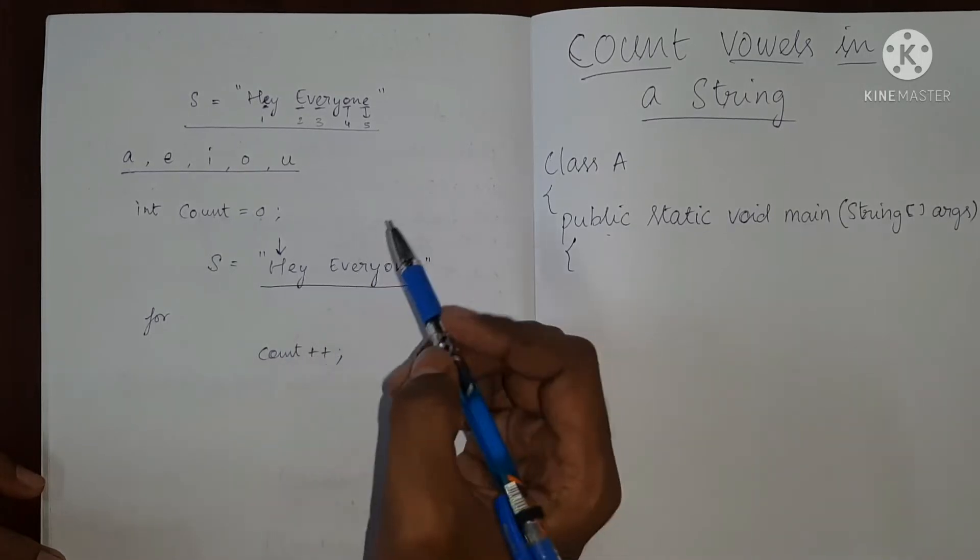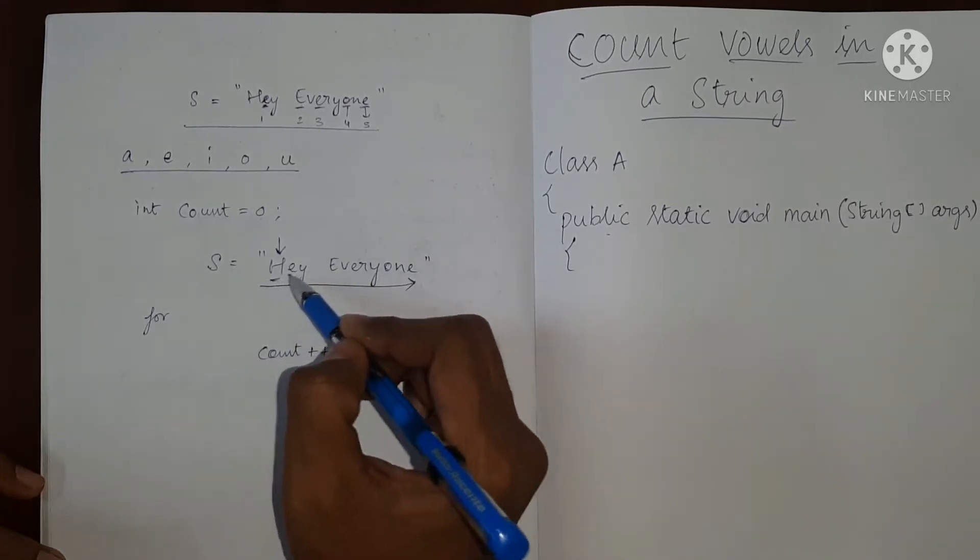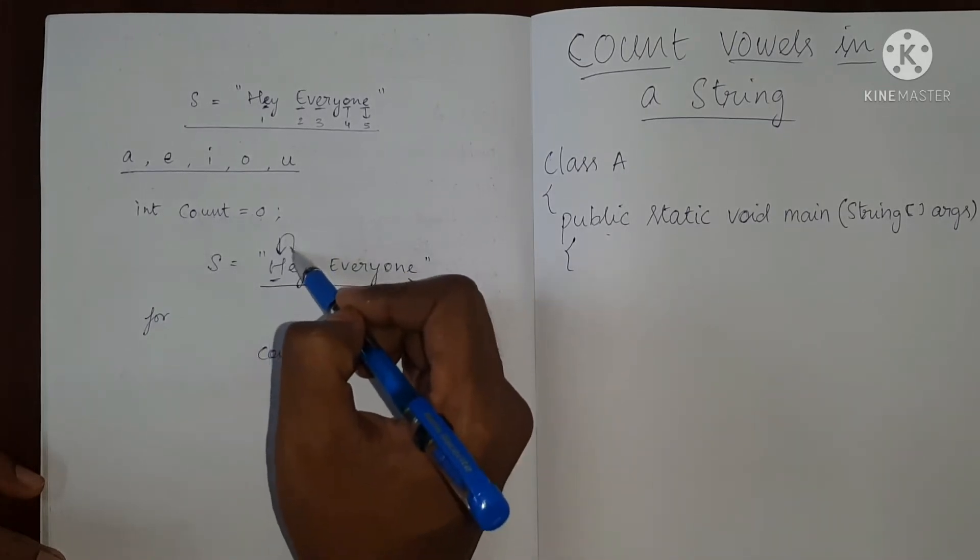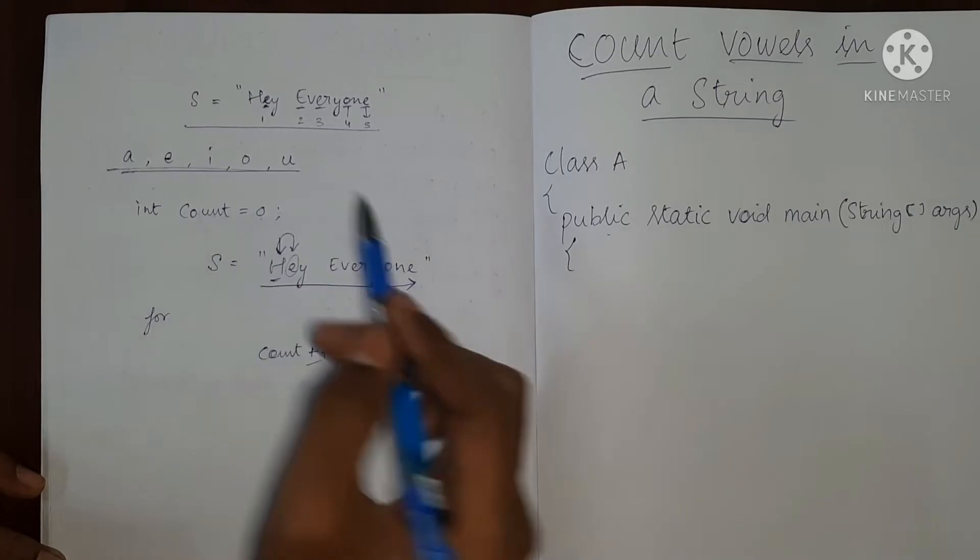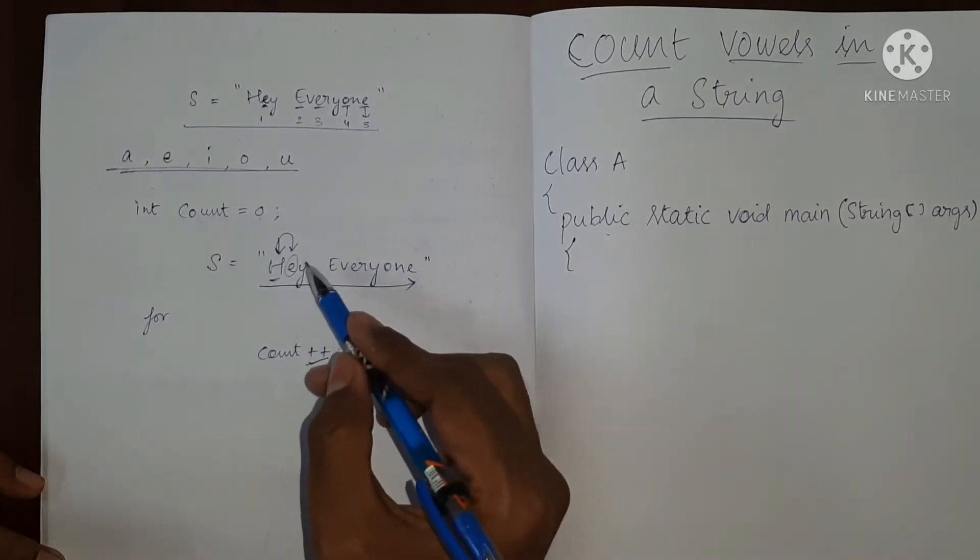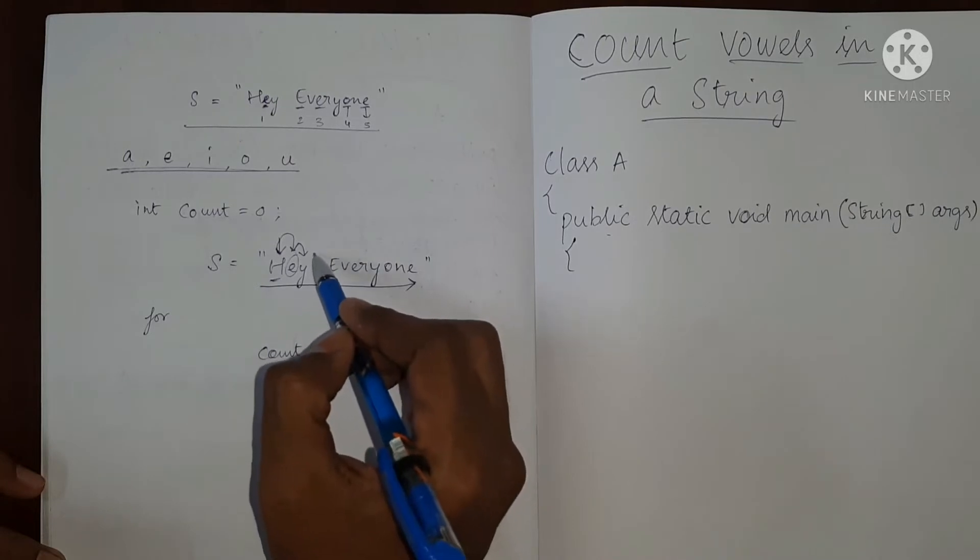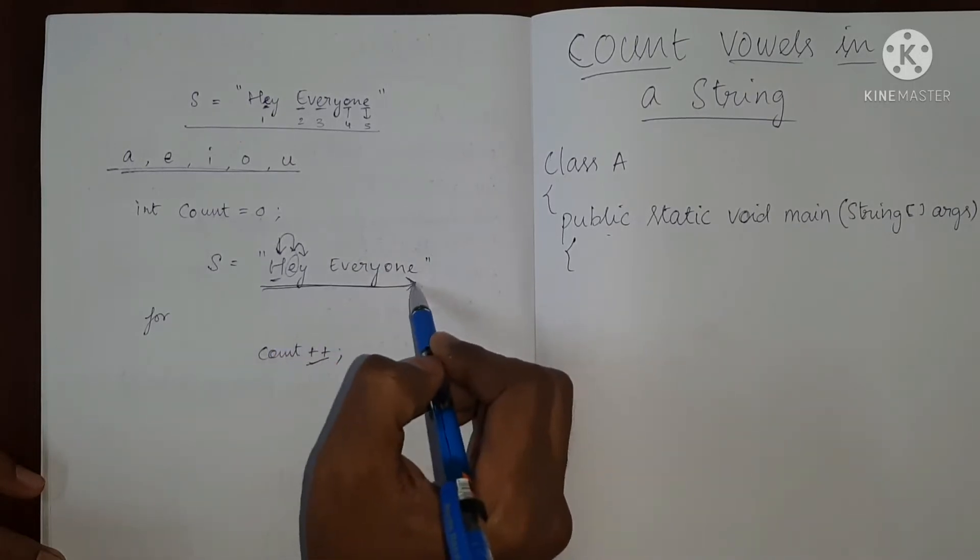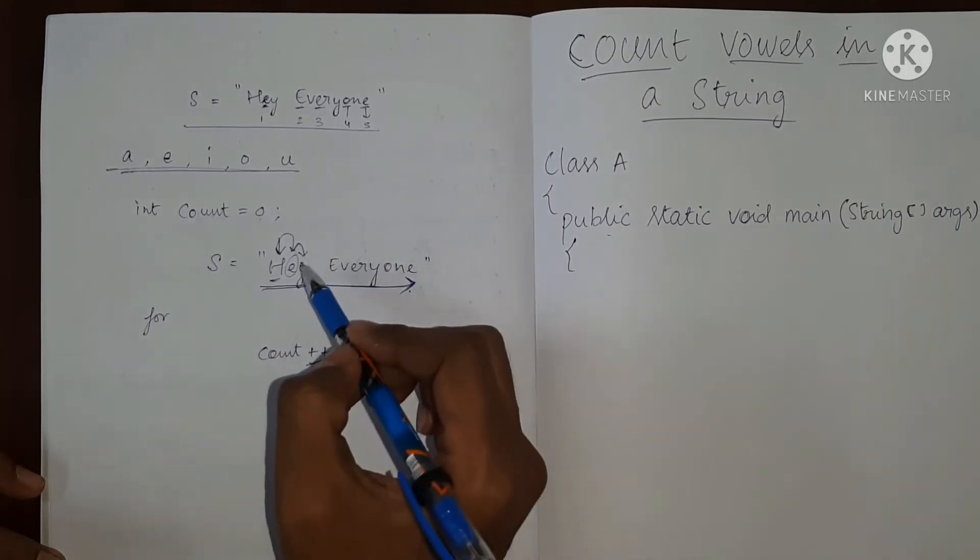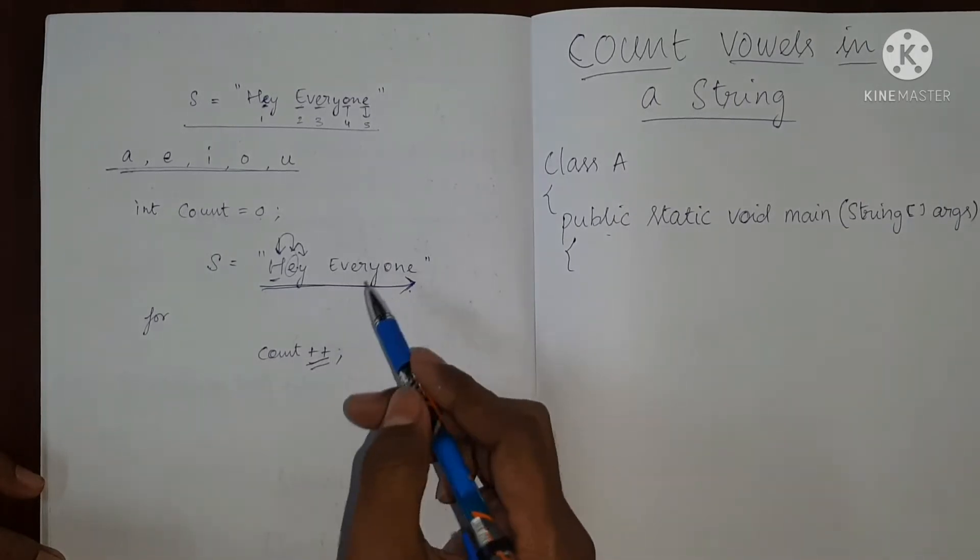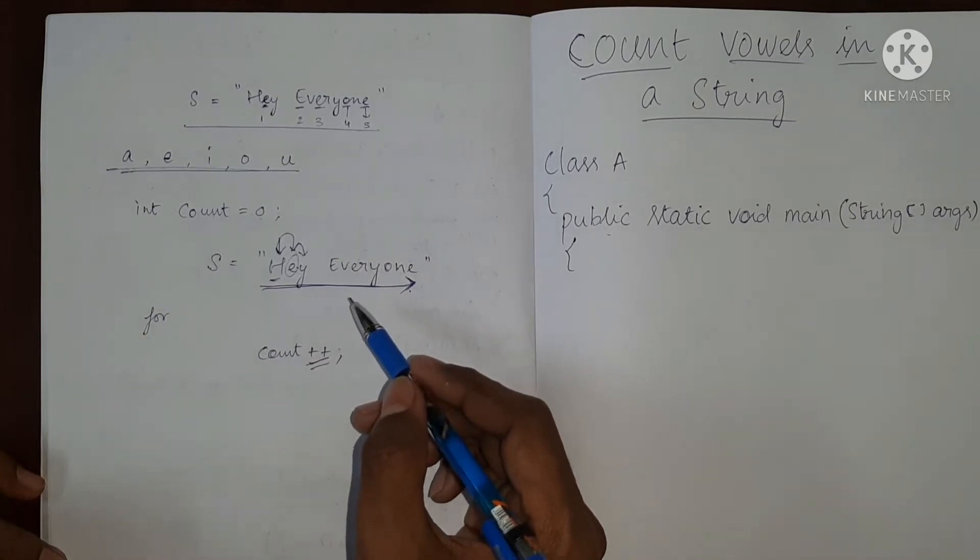If it is not equal, we will move to the next location. So here we see it is a H. So we will not increment, we will move to the next location, we see it is a vowel. So we will do count plus plus, then we move to the next character. And this way, we are going to traverse the string and check if it is a vowel or not. If it is a vowel, we will increment count. If it is not a vowel, we will just move to the next character.